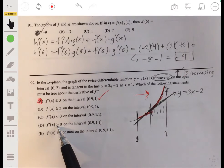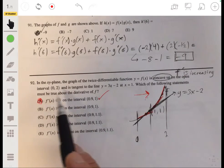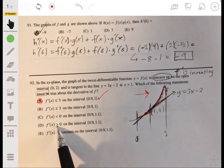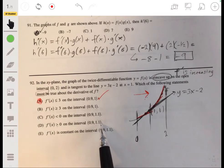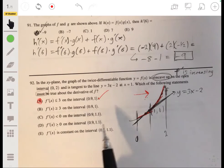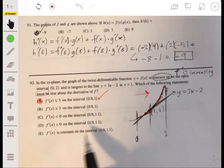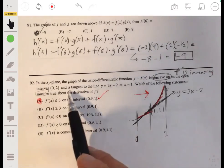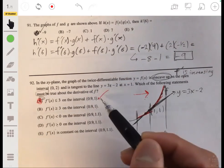Now for d, now d could be true, but it's asking which must be true. Because it's possible that the derivative is not greater than 0 on this interval. You know, so it's not that it could be true, but it's not that it has to be true. And e, yeah, again, it's the same idea. And it's not going to be constant, they're saying concave up, so it's changing. So the answer is definitely a.